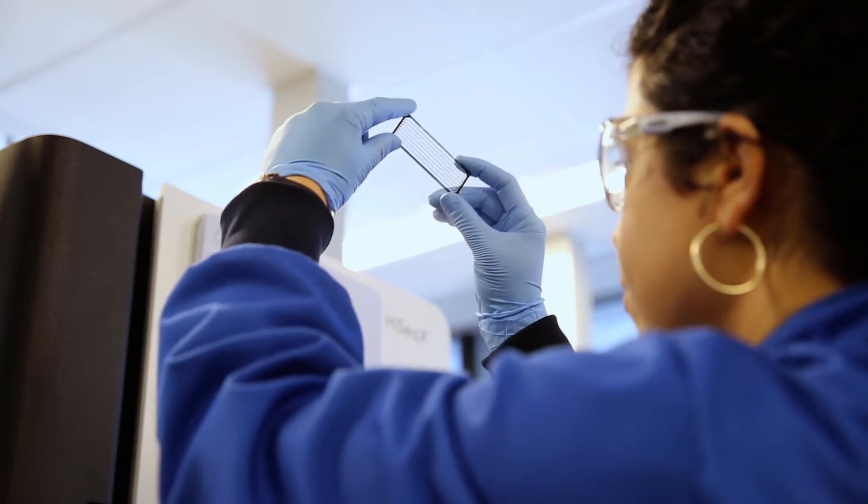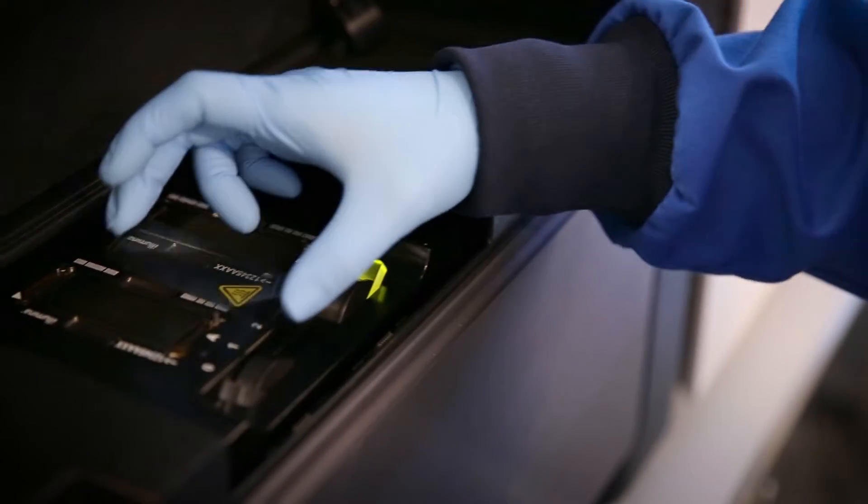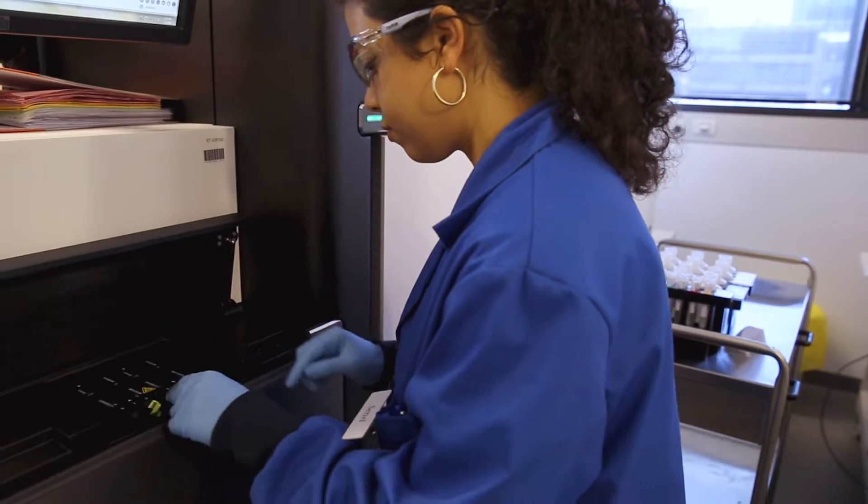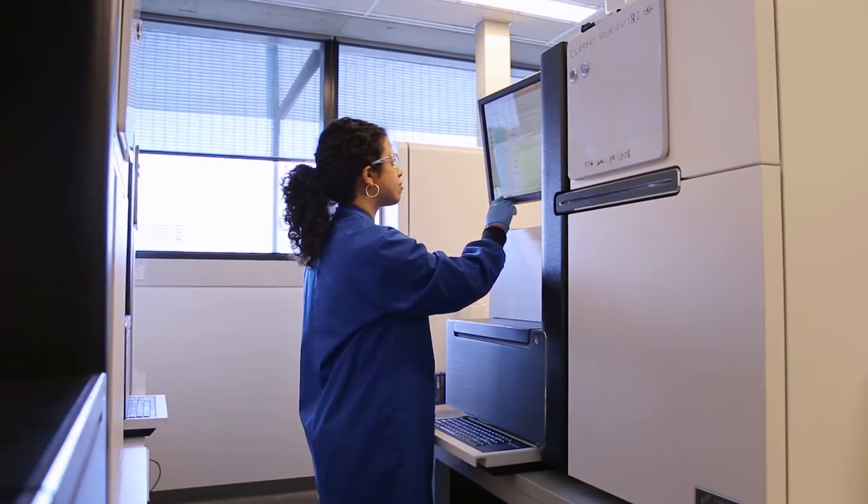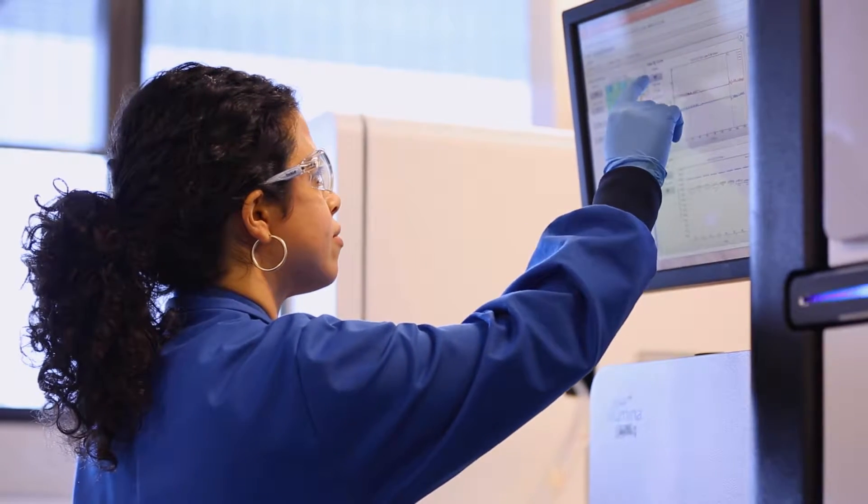A sequencing machine is basically a high-resolution microscope combined with some complicated chemistry that allows you to capture the linear order of bases within our DNA. Each of these machines can sequence a whole human genome within a few days and that generates terabytes of data.